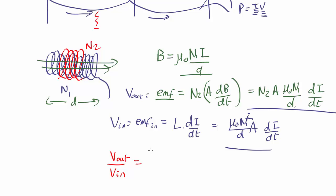And we just get the N2, the number of loops in the output coil, divided by N1. And that's the fundamental equation for transformers.